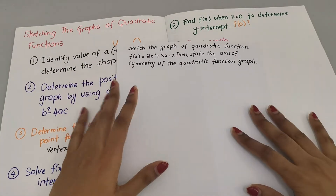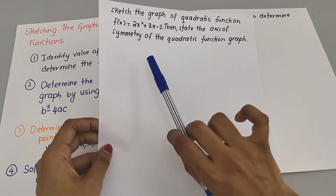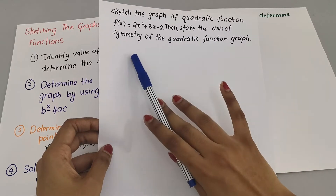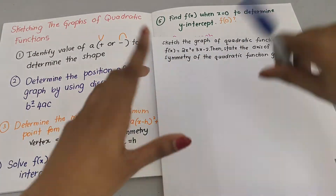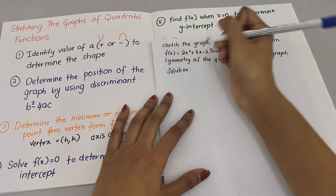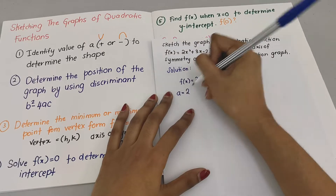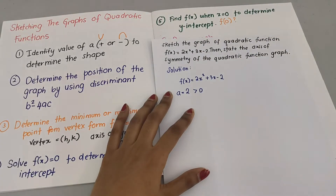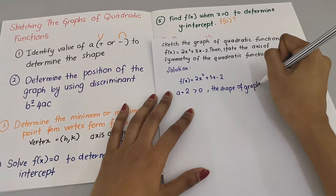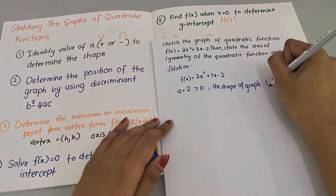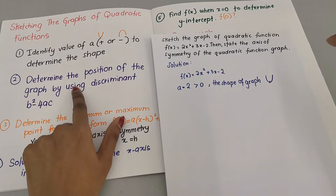Now let's look at one example. The question asks you to sketch the graph of a quadratic function and state the axis of symmetry. Our function is f(x) = 2x² + 3x − 2. Step 1: identify the value of a. Here, a = 2. Is 2 greater than 0? Yes — so since a is greater than 0, the shape of the graph will definitely be a smiling graph, and since it's smiling, it will have a minimum point.